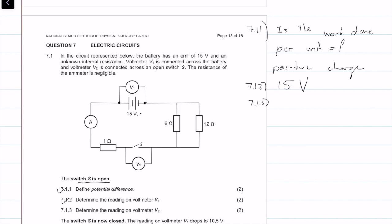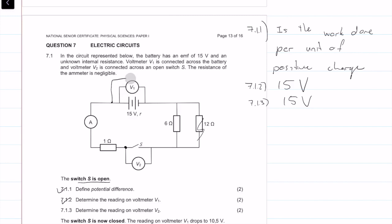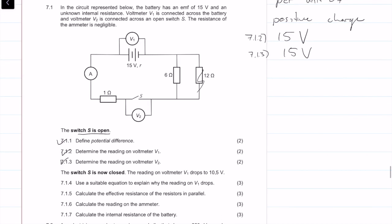Question 7.1.3: determine the reading of voltmeter V2. This circuit is open, so there's no current flowing. That means we can effectively move the cable — there's no current through the ammeter — so V2 is the same as having it connected across the battery. The voltage is again 15 volts, because there's no current running through any of these resistors or cables. We get six marks in total.